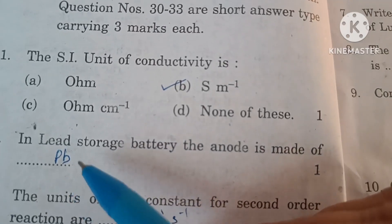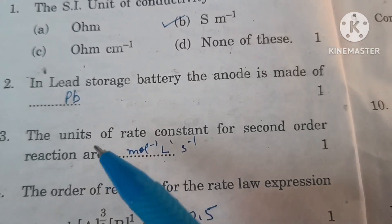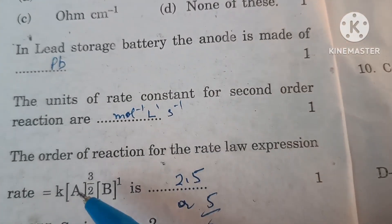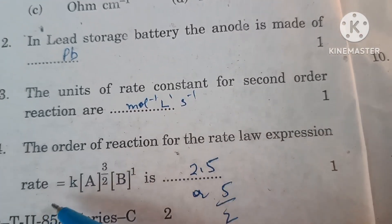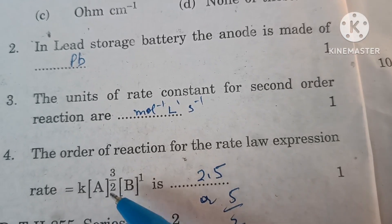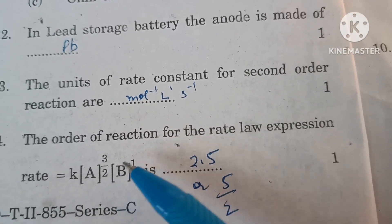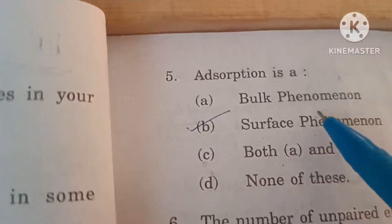The units of rate constant for second order reaction are mole inverse liter second inverse. The order of reaction for the rate law expression rate equals k times A raised to power 3/2 times B raised to power 1 is 1.5 plus 1 equals 2.5 or 5/2. Adsorption is a surface phenomena.